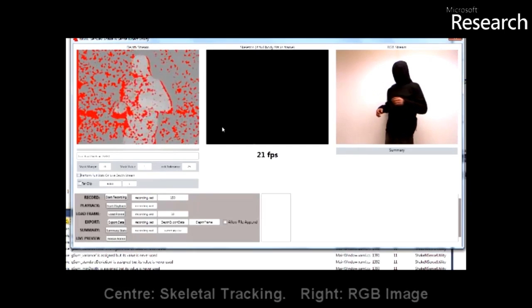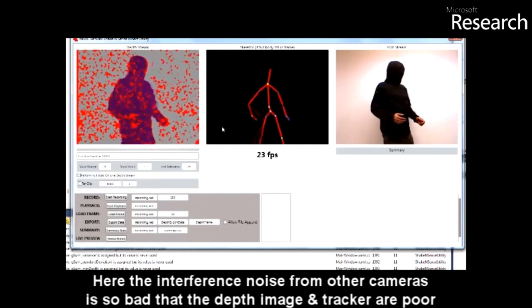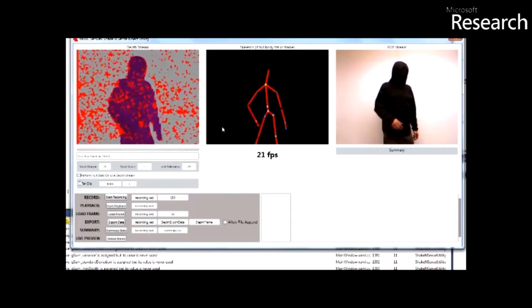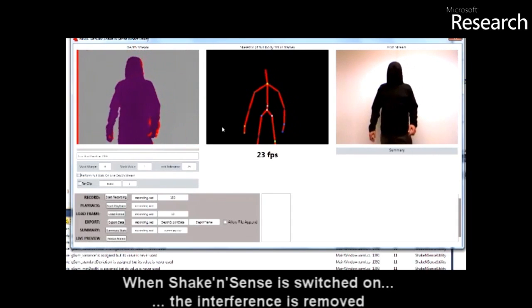In this example, the interference is so bad that both depth map and skeletal tracking quality is seriously degraded. Vibrating the sensors effectively removes the noise.